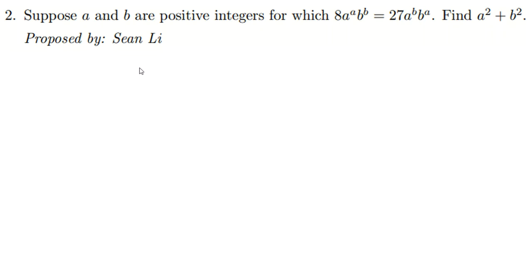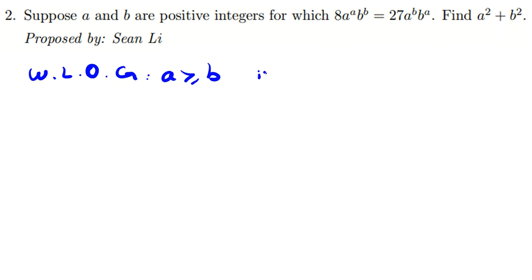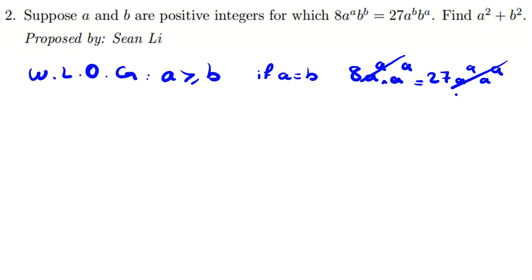Here a and b are positive integers. Notice a^a·b^b and a^b·b^a are symmetric, so without loss of generality we can say a is greater than or equal to b. If a equals b, then we can cancel and reach the contradiction 8 equals 27. So we conclude a is strictly greater than b.